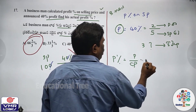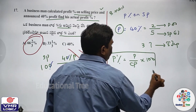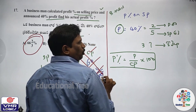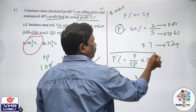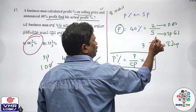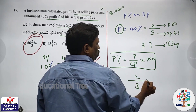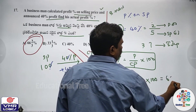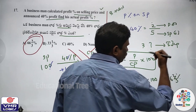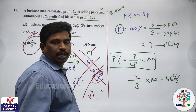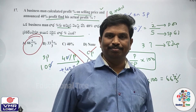Actual profit percent formula: profit by CP into 100. Profit is 2, CP is SP minus profit = 5 minus 2 = 3. So 2 by 3 into 100 = 66 and 2 by 3 percent profit. That's all. That's the VMI method.